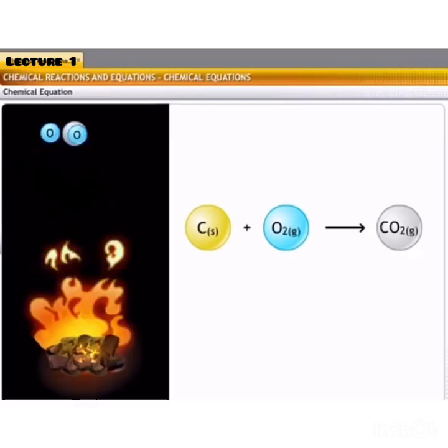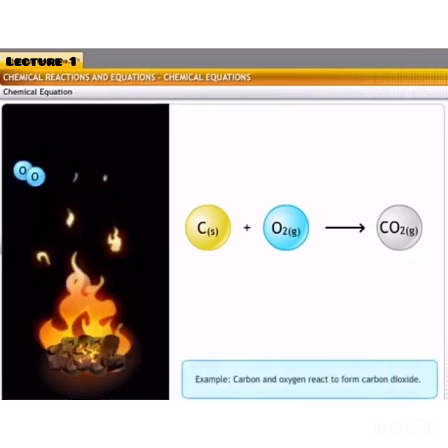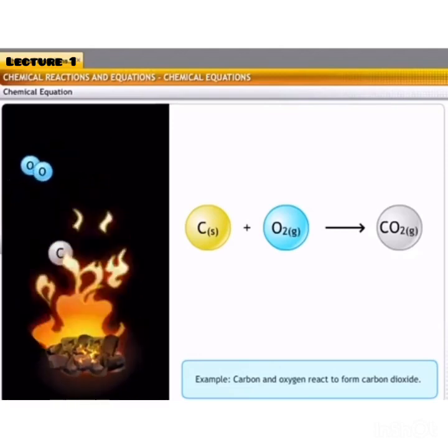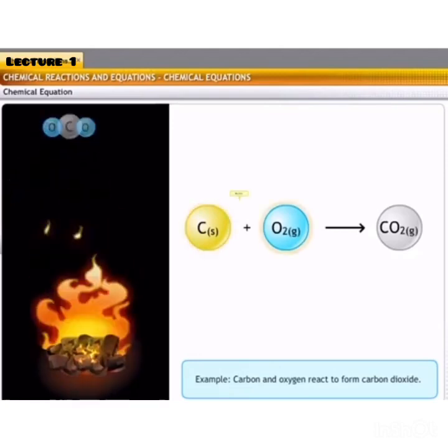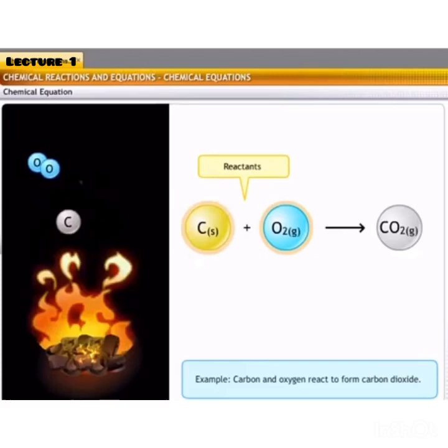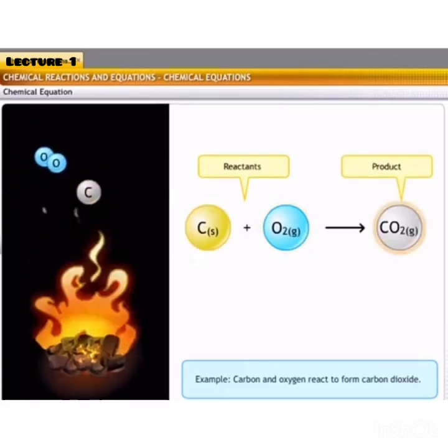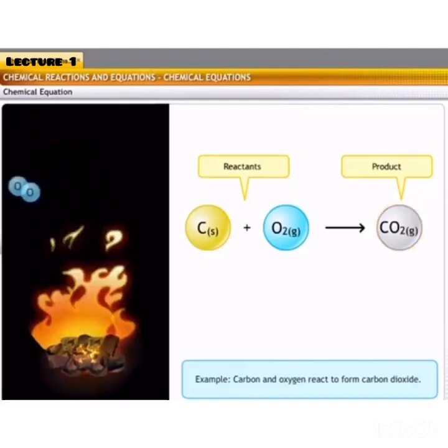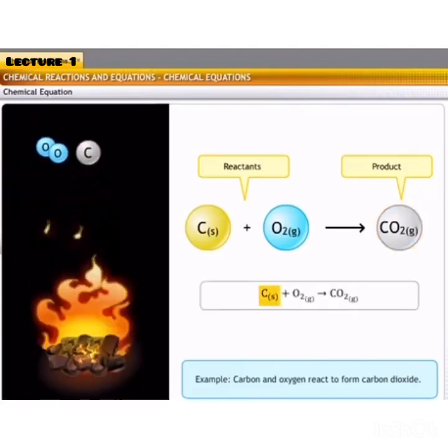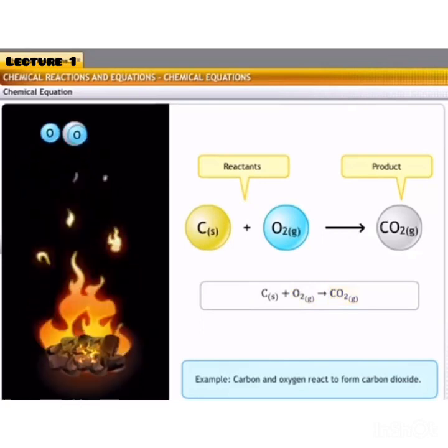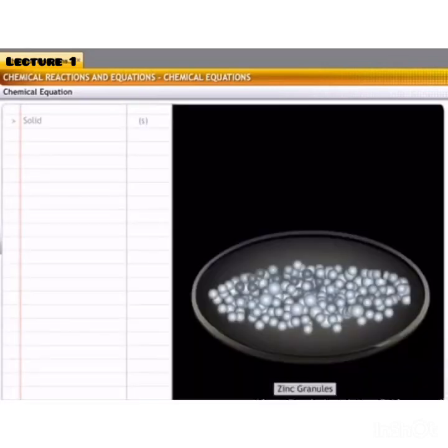Coal, in which carbon atoms are present, reacts with oxygen to give carbon dioxide gas. So, symbolically, represented as solid carbon reacts with gaseous form of oxygen to form gas carbon dioxide. So, carbon and oxygen are reactants and carbon dioxide is product in this reaction.